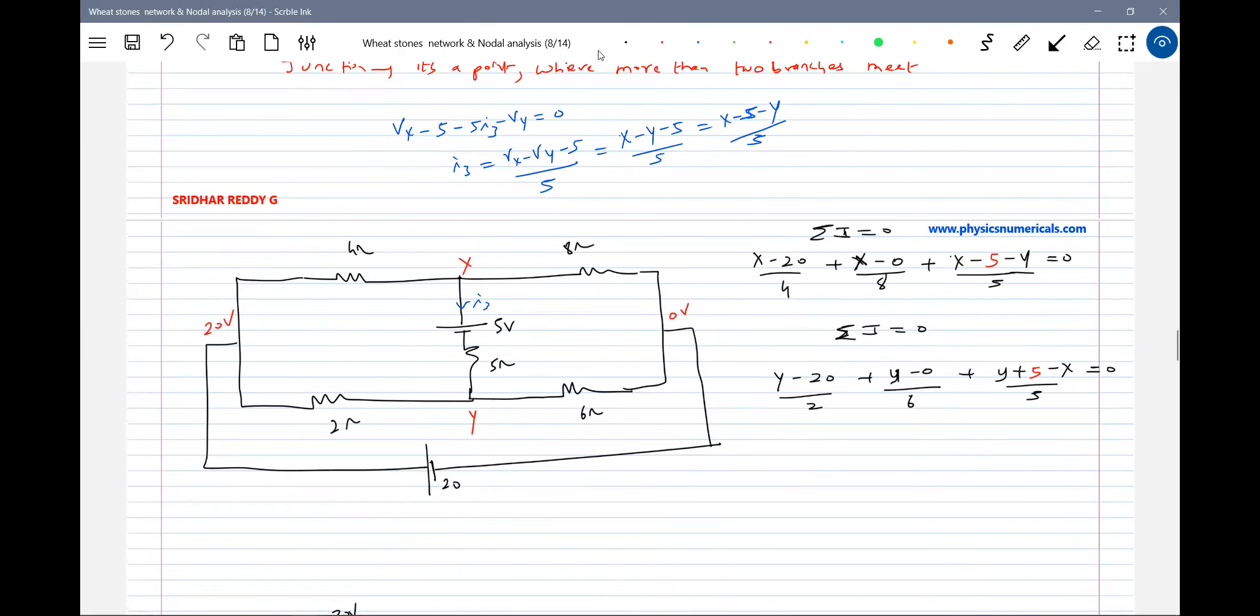This is the method of writing. X and Y are potentials, instead of writing VX, we are writing it as X. How to write? This is KCL. What we applied: the algebraic sum. X minus 20 by 4, current in this branch. X minus 0 by 8, current in this branch. Because your cell is there, if you move from positive to negative, it should be rising EMF.